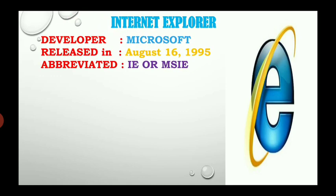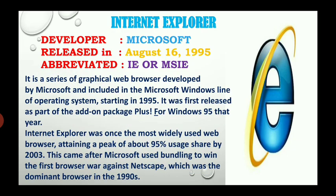Internet Explorer - the developer is Microsoft, released on August 16, 1995. Abbreviated as IE, or MSIE - Microsoft Internet Explorer. It is a series of graphical web browsers developed by Microsoft and included in the Microsoft Windows line of operating systems. It was first released in 1995 as part of the add-on package Plus! for Windows 95.